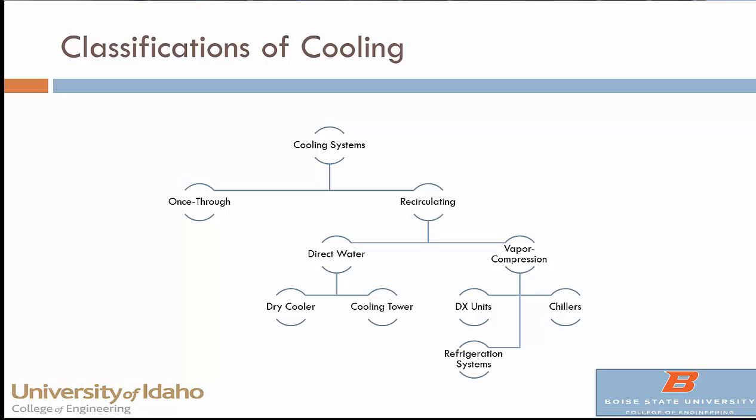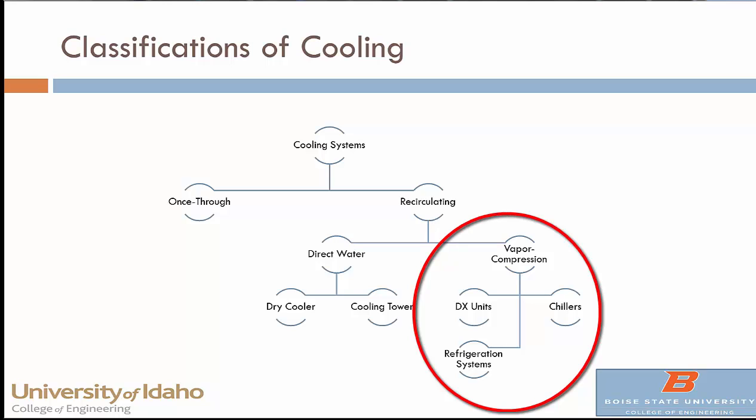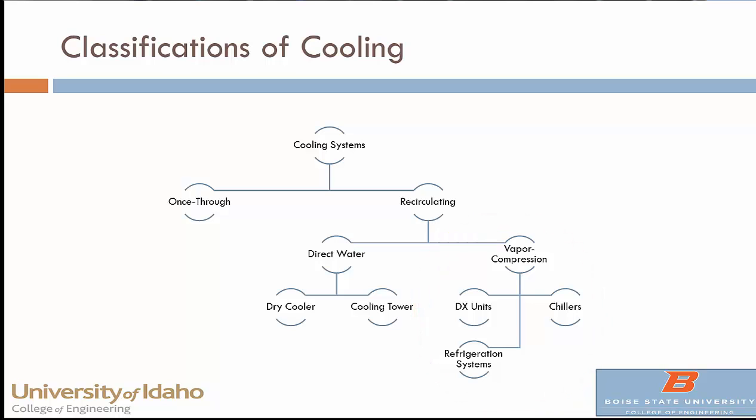The first division is between once-through and recirculating systems. The bulk of what we're looking at are recirculating systems — ones that use water directly and go through either a radiator-type device outside or a cooling tower. Then there are ones that use the vapor compression cycle and a thermodynamic cycle to pump heat from an area of low temperature to an area of higher temperature.